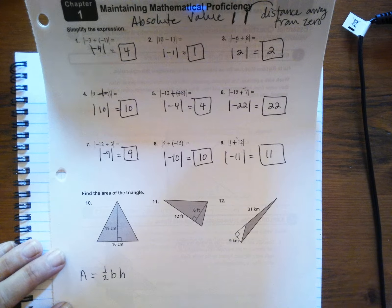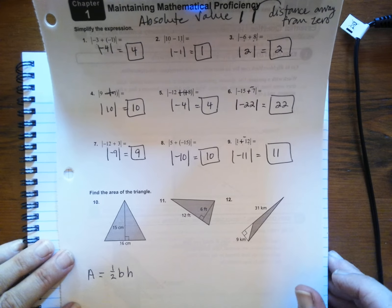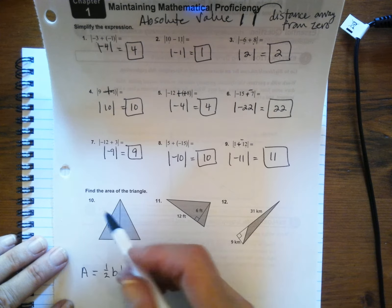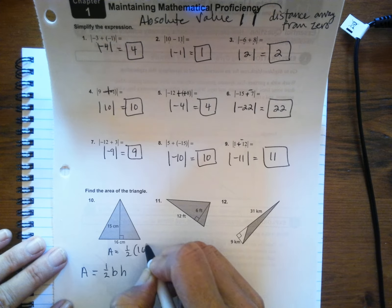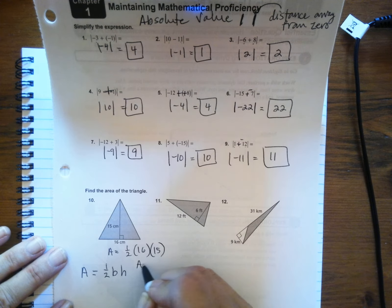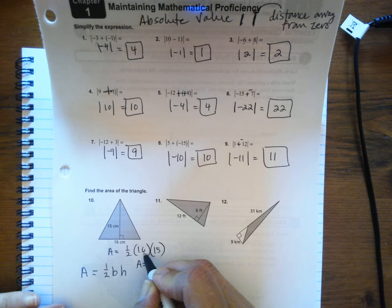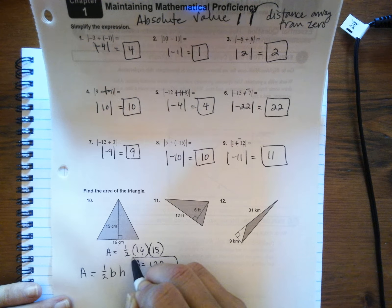So I don't memorize formulas. I try to figure out ways to remind myself of what they are. So for number 10, A equals one half times the base times the height. So A equals one half, and half of 16 is 8, 8 times 15 is 120. Always use your units. And you multiplied centimeters twice, so that's centimeters squared.